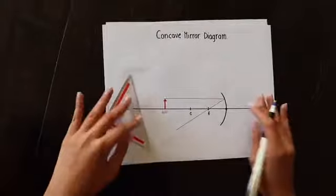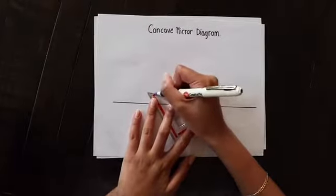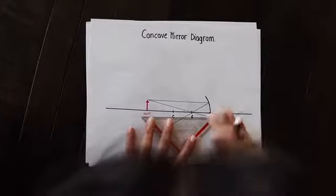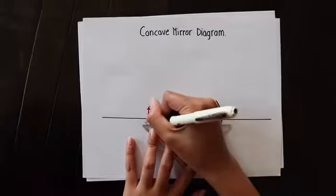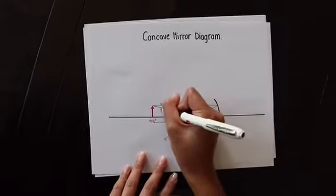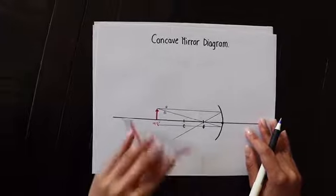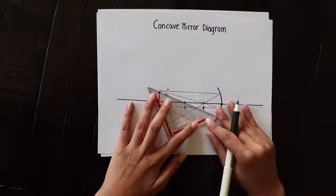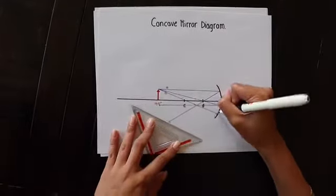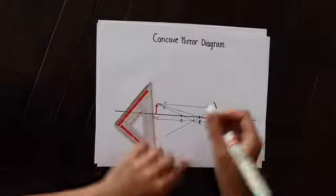That's the first ray. The second ray is going to go through the focal point first, and then reflect back parallel. Those are the first two rays. The third ray has to do with the center of curvature, which is basically double the focal point, and it's just going to go straight through that. As you can see, they all intersect at the same point, which is where the image for this mirror will be created.